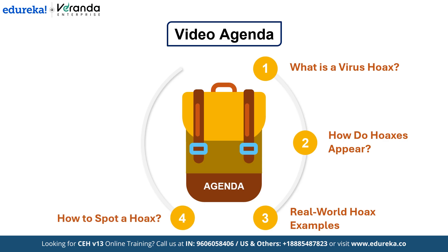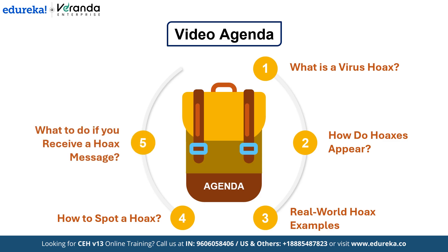Next, moving on to how to spot a hoax. Knowing how to identify a hoax is the first step in protecting yourself. This section will discuss specific warning signs of a virus hoax such as suspicious links, urgent language, and strange email addresses, and will also provide a checklist for assessing whether a message is a hoax. Next, what do you do if you receive a virus hoax message? We will provide actionable steps to take if you ever encounter one — whether it's a suspicious email or pop-up — including what to do if you've already clicked something and how to stay safe in the future.